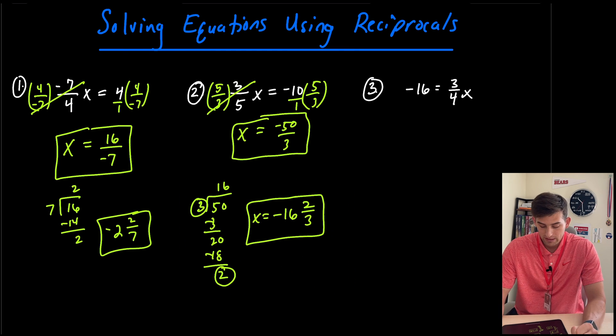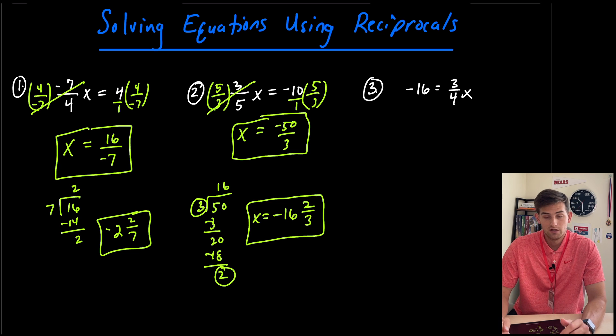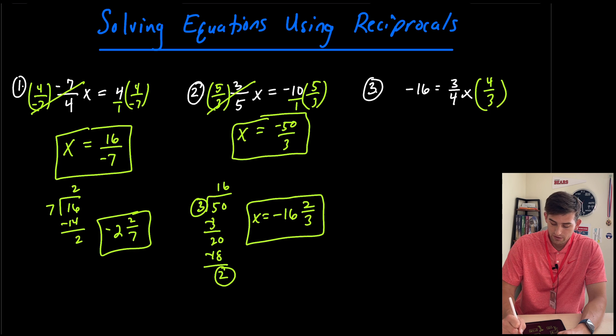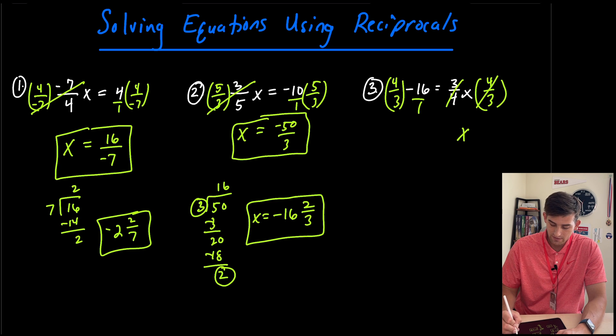Okay, for number three, we have negative 16 is equal to three fourths x, so our reciprocal of our coefficient would be four over three. So we're going to multiply both sides by four over three, and that's going to get rid of our coefficient on the right side. So we just have x here.